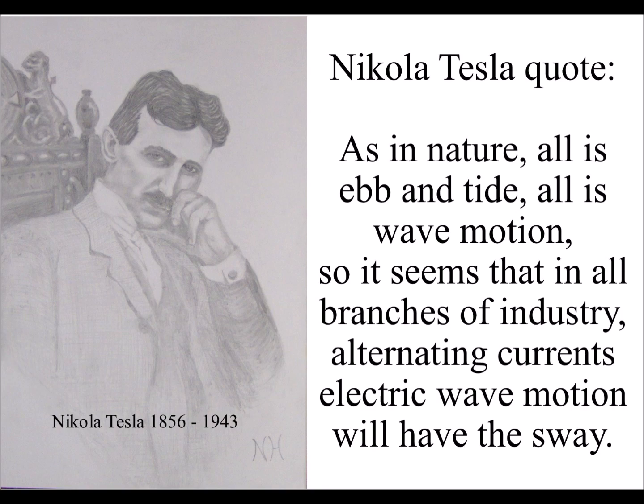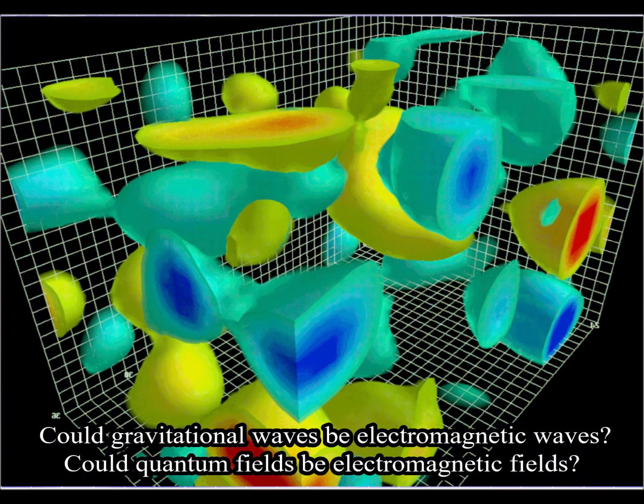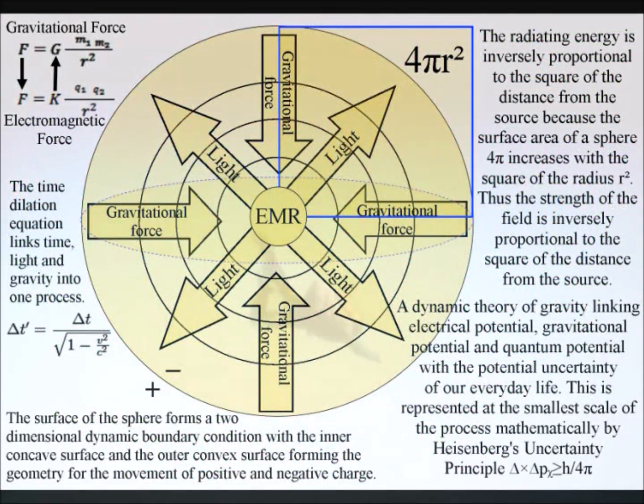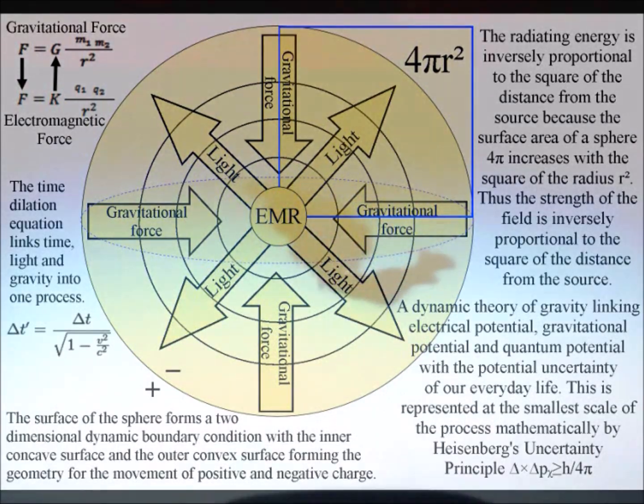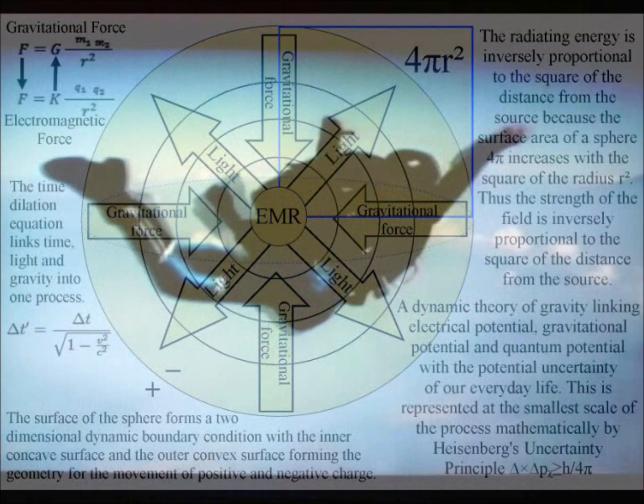Today scientists talk about gravitational waves and quantum fields. But what if Tesla was right and everything is based on electromagnetic waves, with gravitational fields being a secondary process?